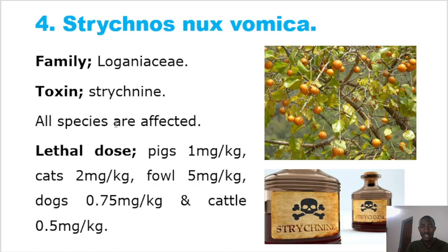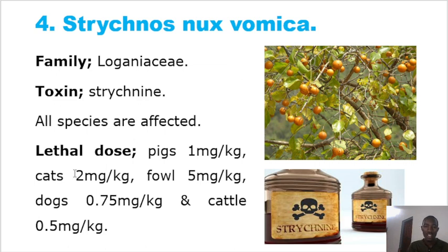Another common toxic plant is Strychnos nux-vomica, in the family Loganiaceae. It contains the toxin strychnine, which is used to kill dogs when their population increases. Strychnine affects all species — the lethal dose in pigs is 1 mg/kg, in fowl it is 5 mg/kg, in dogs it is 0.75 mg/kg, and in cats it is 0.5 mg/kg. It is highly toxic.